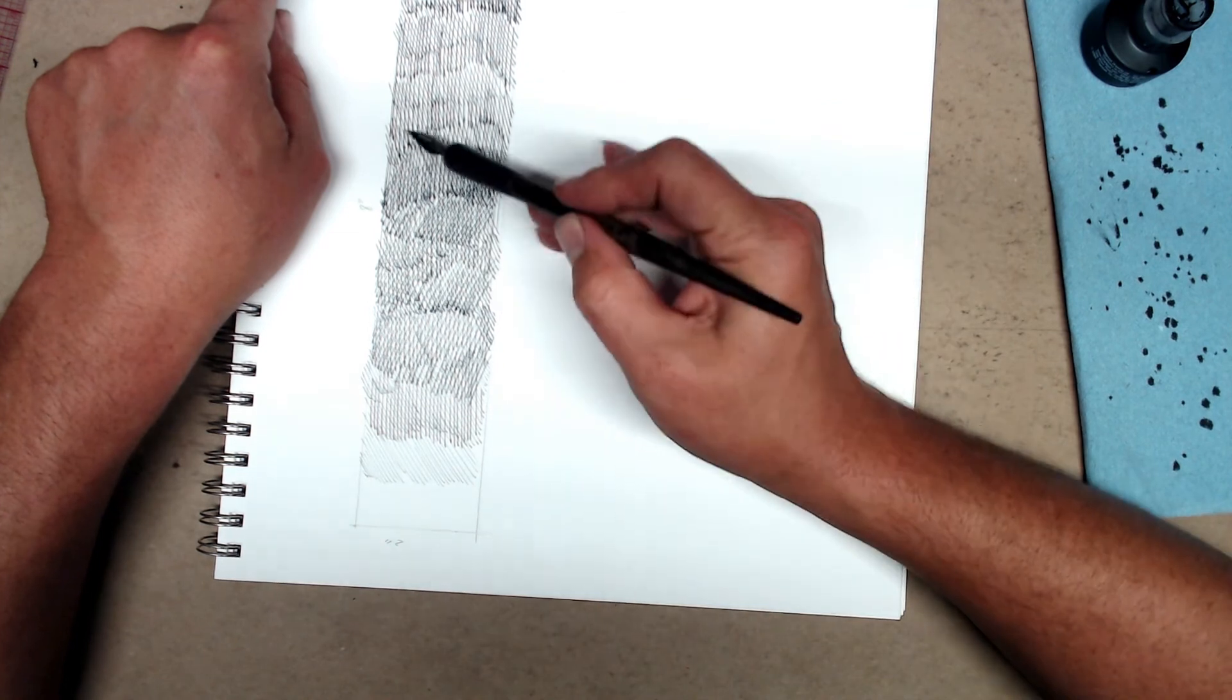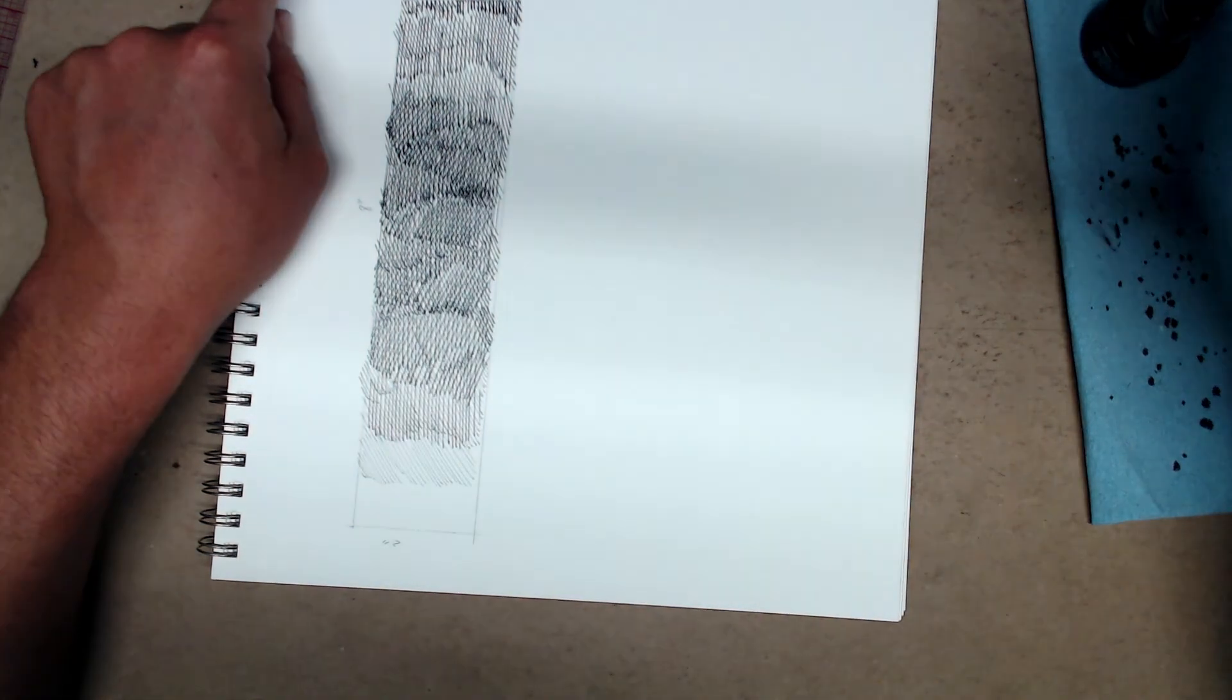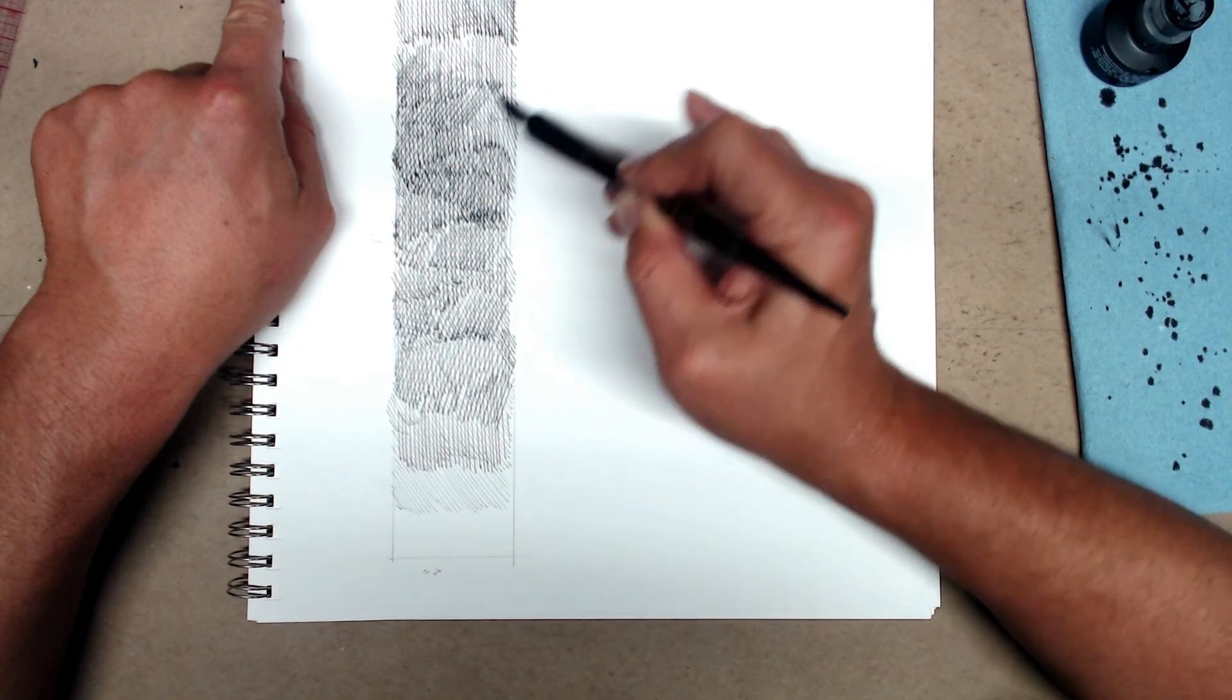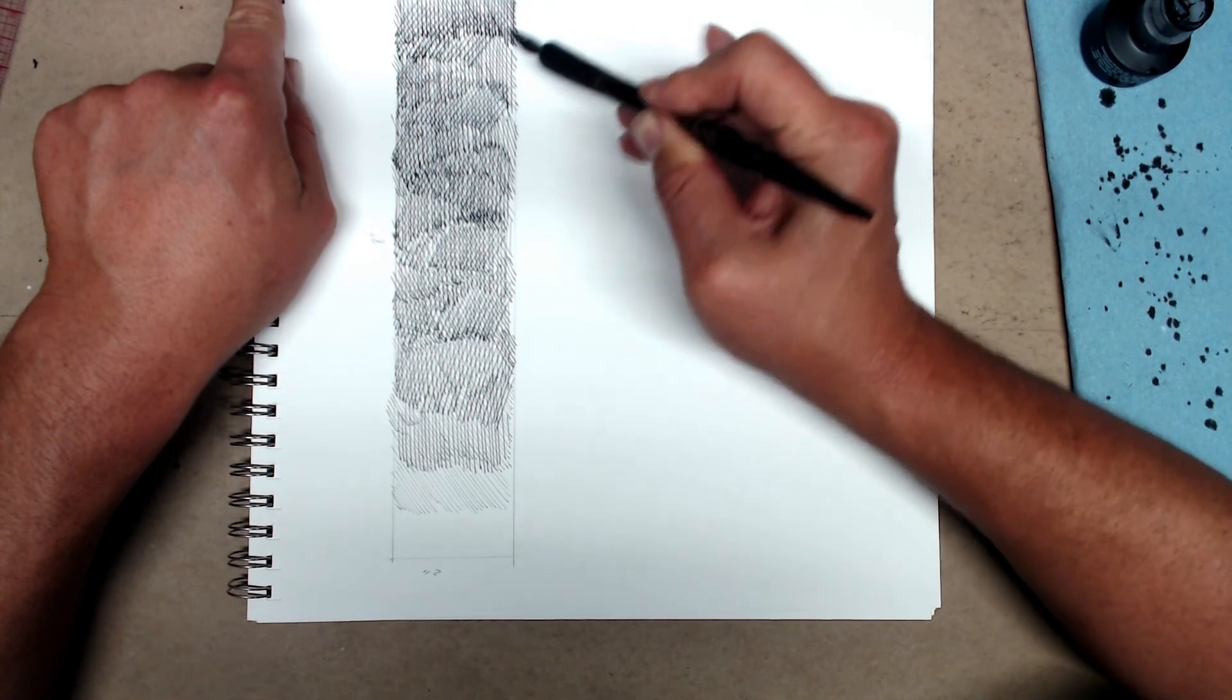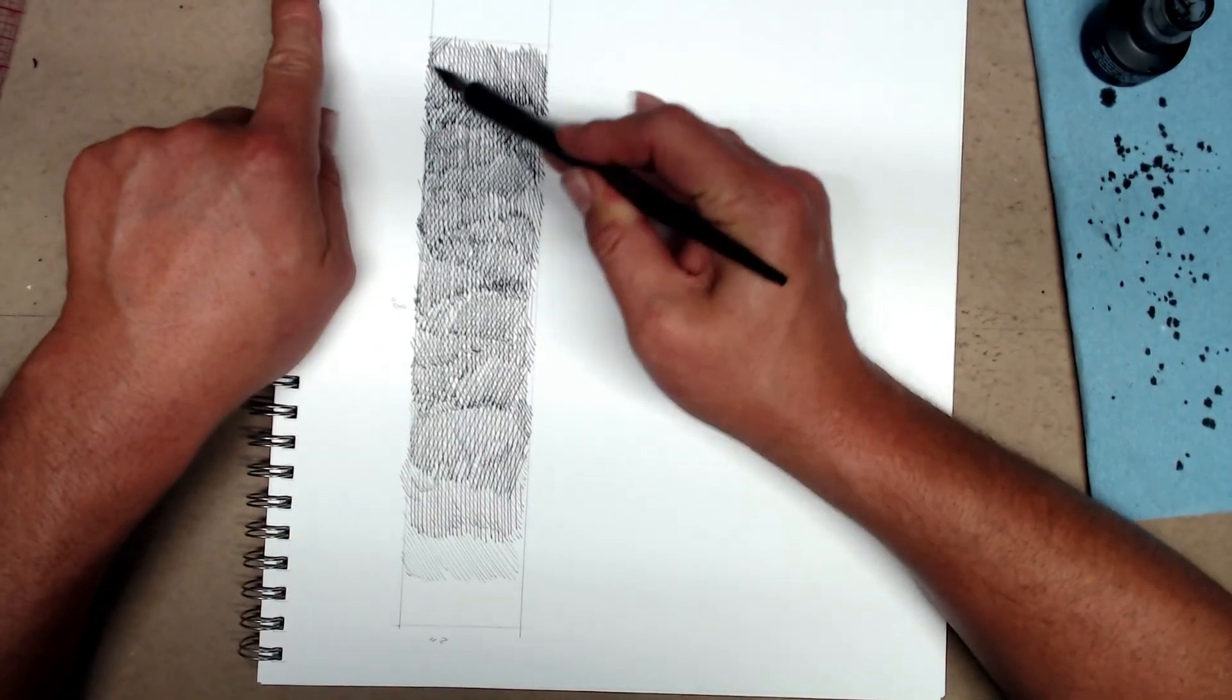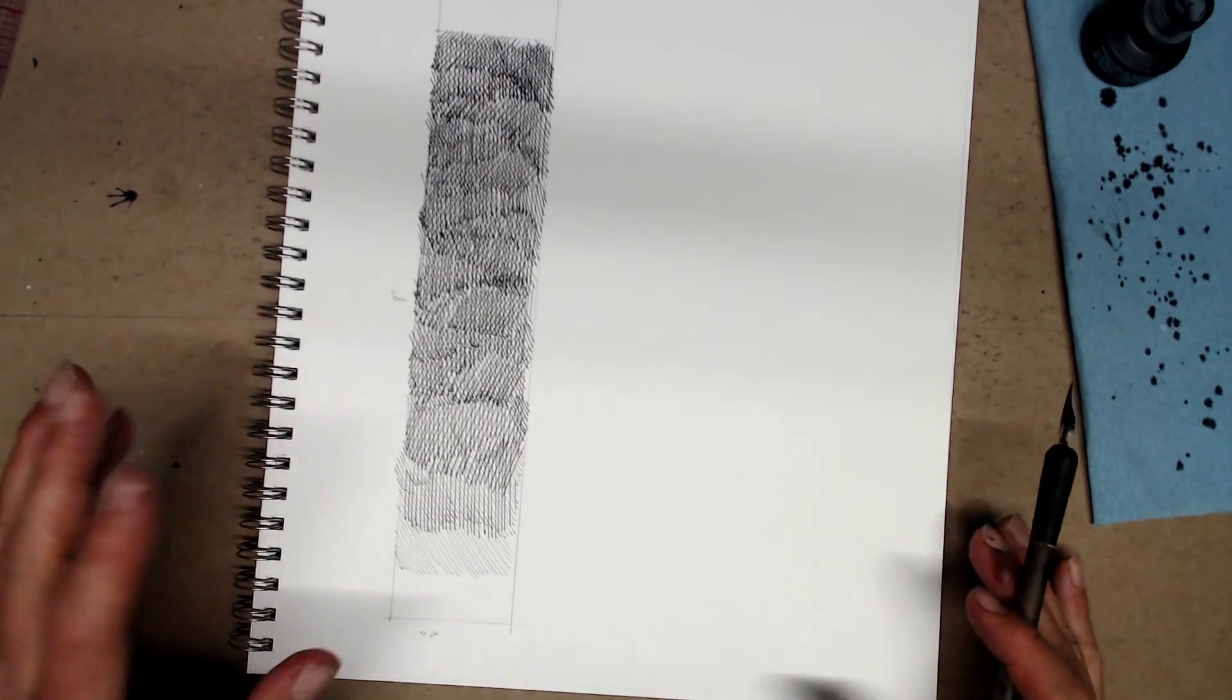Go a little bit darker. This exercise is going to help you build even hatching. It's going to help you practice your hatching. It's also going to develop control. So, this is a really useful exercise, though it's not particularly interesting.